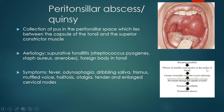Recurrent tonsillitis causes fibrosis of the tonsillar crypts. Closure of these tonsillar crypts due to repeated infections means the infection remains within, causing an intratonsillar abscess. That abscess first starts within the tonsil itself and then erupts outward, causing peritonsillar cellulitis which progresses to a peritonsillar abscess.